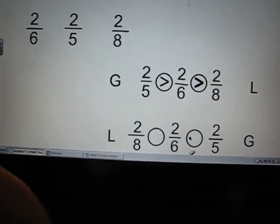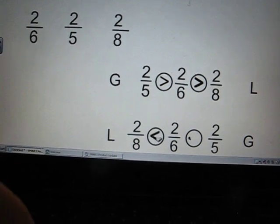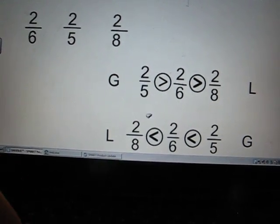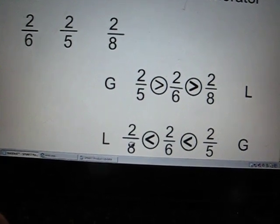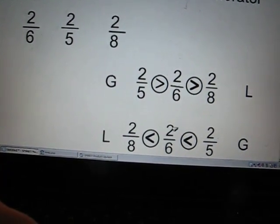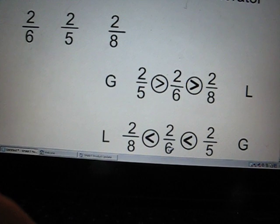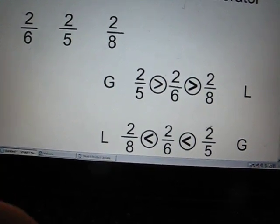Now, we have to do our greater than, less than signs. Remember, alligator eats the bigger fraction. Two-eighths is less than two-sixths. And two-sixths is less than two-fifths.